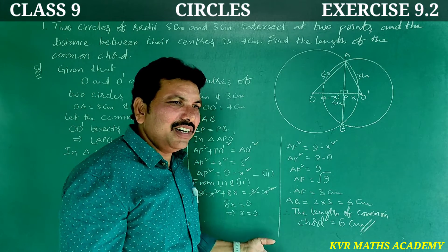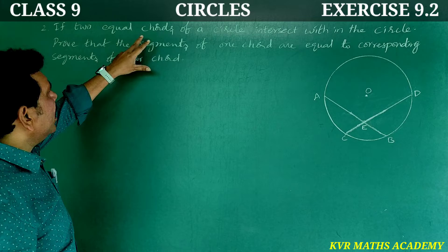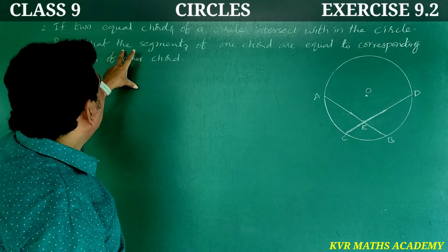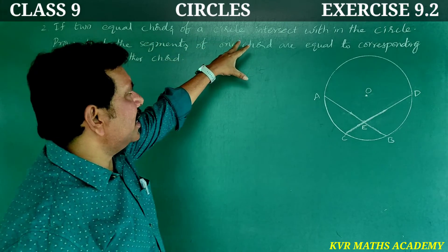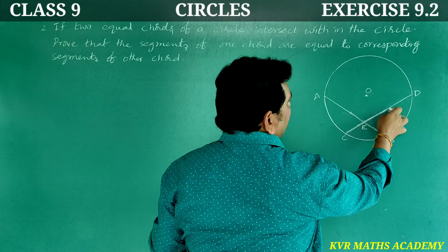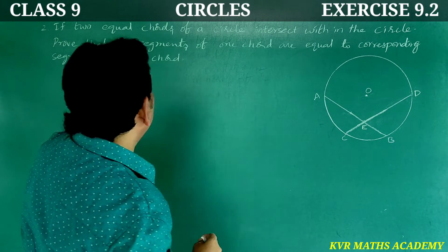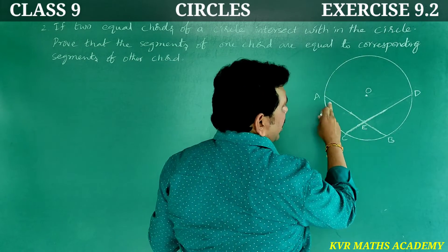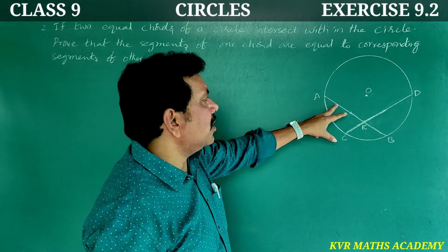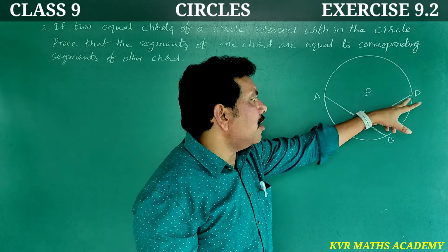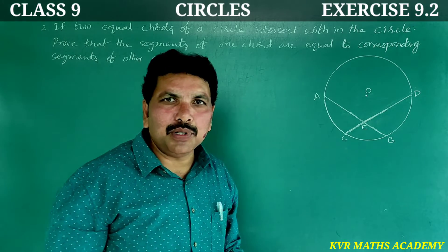Have you understood clearly? Now the second question: If two equal chords of a circle intersect within the circle, prove that the segments of one chord are equal to the corresponding segments of the other chord. AB and CD are equal chords of the circle that intersect at point E inside the circle.